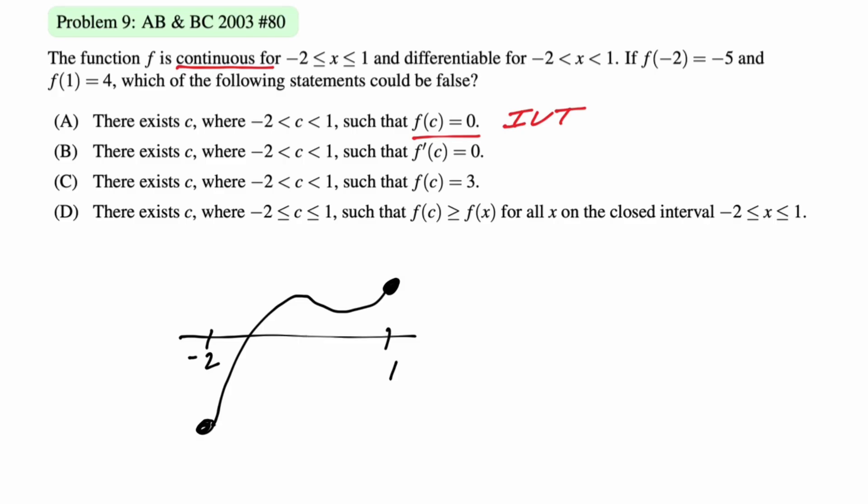The next one. There exists a c between negative 2 and 1 such that f prime of c is 0. I mean in my picture that's true, but I don't think that's generally going to need to be true, and so I think that's our answer. But here's an alternative picture, right? Just a linear function. There is no place that the slope is 0. Let's keep going just in case though. I mean that's definitely the answer, but we're going to keep going.